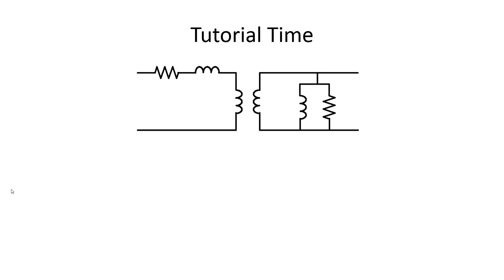Let me draw the equivalent model of the transformer. There we have an ideal transformer with a nominal ratio of 20,000 to 480. The short circuit resistance and short circuit reactance are on the high voltage side. On the low voltage side, we have the equivalent core loss resistor and the magnetization reactance.